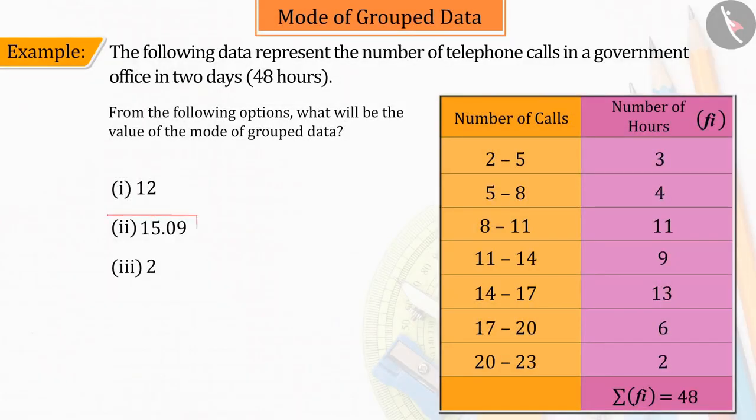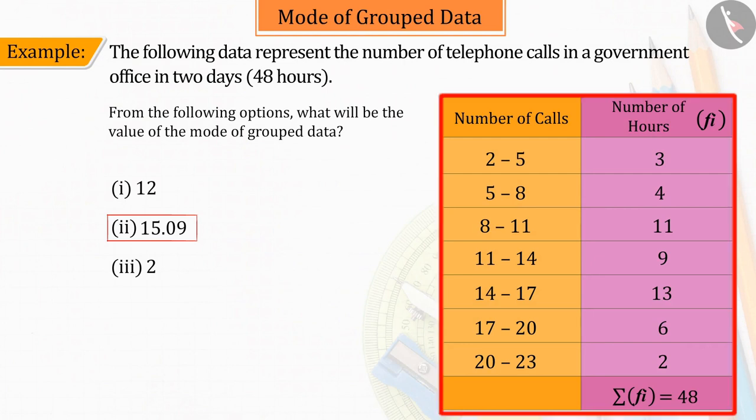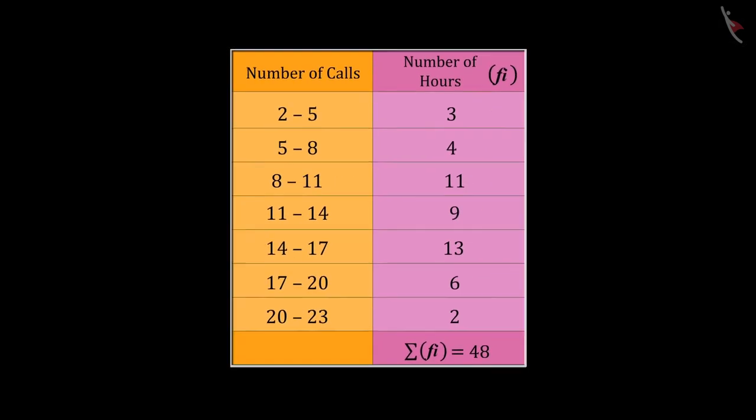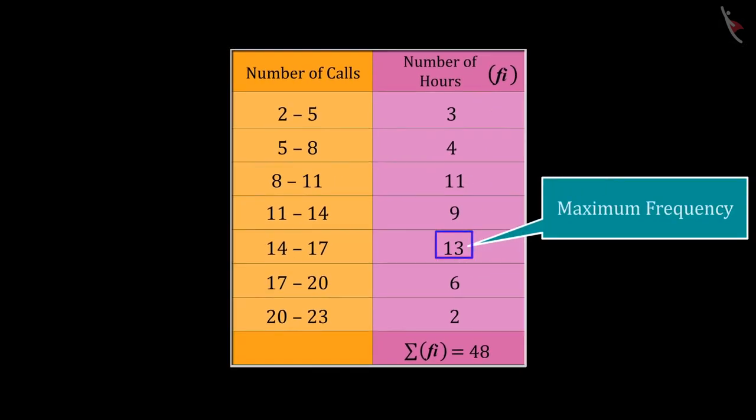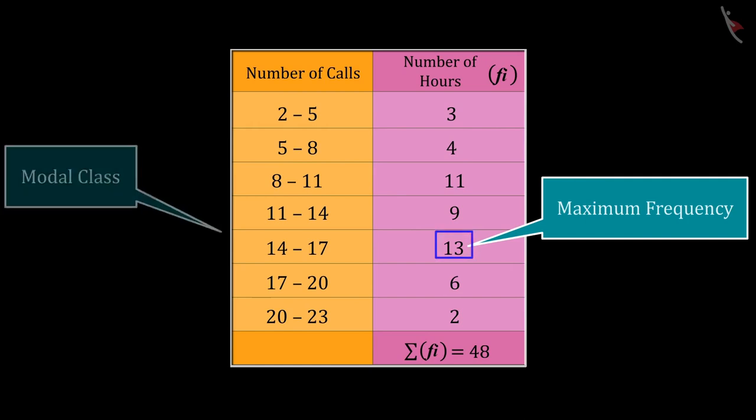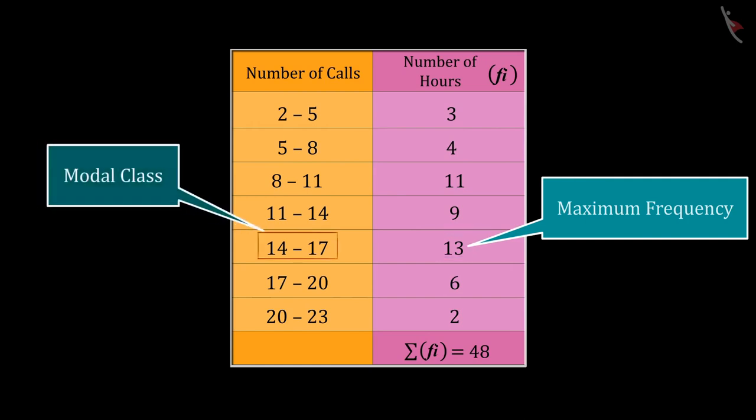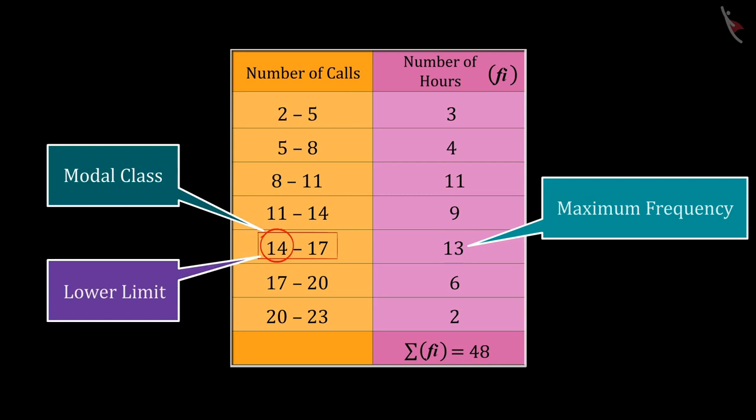Let's discuss option 2. We know that to find the mode, we first need to choose the maximum frequency of the data. So, from the given data, we can tell that the maximum frequency here will be 13, whose modal class is from 14 to 17, where 14 is the lower limit of the modal class.